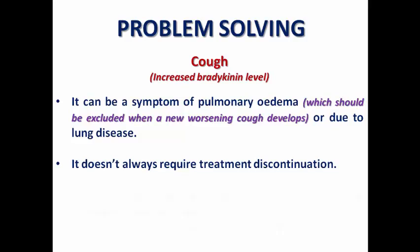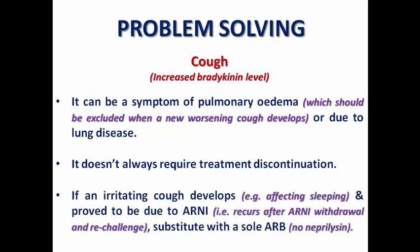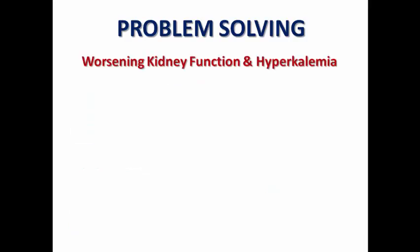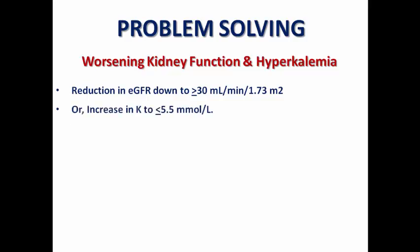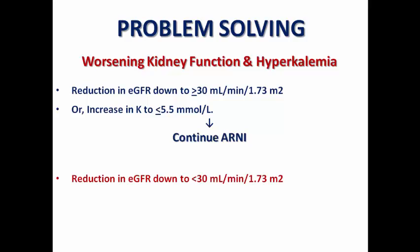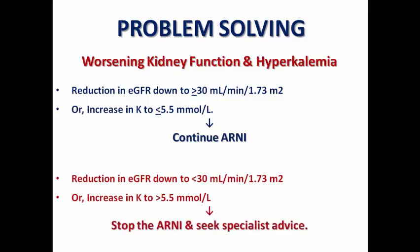Cough does not usually require treatment discontinuation. However, if an irritating cough develops affecting sleep and is proven to be due to ARNI — recurs after withdrawal and rechallenge — substitute ARNI with an angiotensin receptor blocker alone, removing the neprilysin inhibition that raises bradykinin levels. For worsening kidney function and hyperkalemia, a drop in GFR to 30 or more and potassium rise to less than 5.5 mmol/L: continue ARNI. If GFR drops below 30 or potassium exceeds 5.5 mmol/L, stop ARNI and seek nephrologist advice.